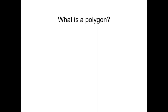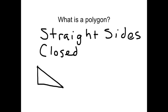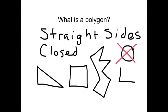Area of Parallelograms. We're going to start with the word polygon. A polygon is a shape that has straight sides and it's closed. Triangles are polygons, squares are polygons, and crazy shapes that have lots and lots of straight sides and are closed are polygons. Circles are not polygons because the sides are not straight. This U shape is not a polygon because it's not closed.